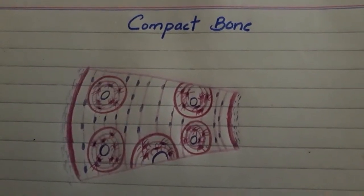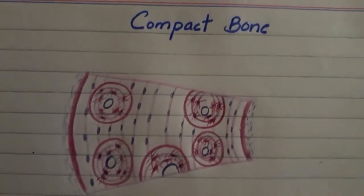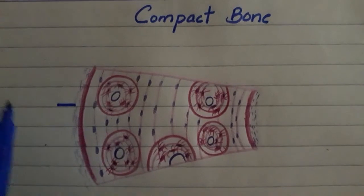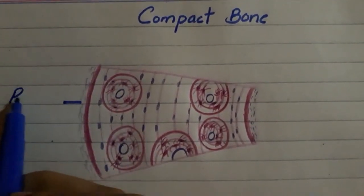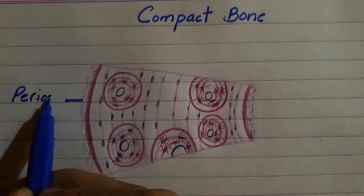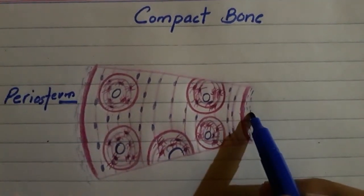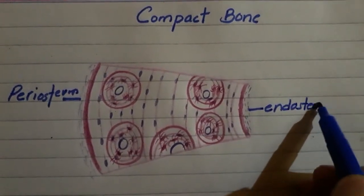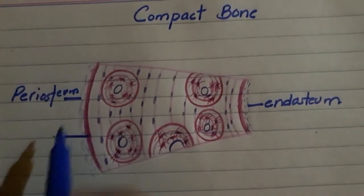That's it, this is our compact bone diagram so let's do this label. We made purple dots. This is periosteum and these little dots are osteocytes.